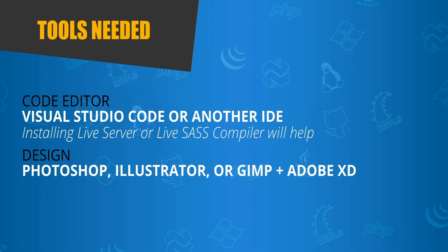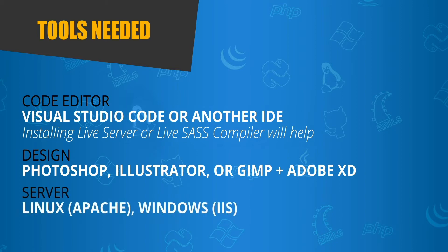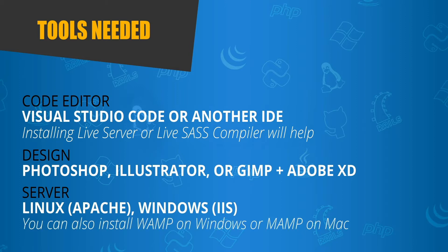Our last required tool is simply a server. You can use either Linux, like Ubuntu with Apache, or you can use Windows. A server can sometimes be complicated for beginners, but you can install something like WAMP on Windows or MAMP on a Mac if you want an out-of-the-box solution. A server is where you store your files, access your database, and run your code. It is required for any development that uses back-end code, but front-end code can exist without a server, though having one is a better option for when you start developing dynamic code.